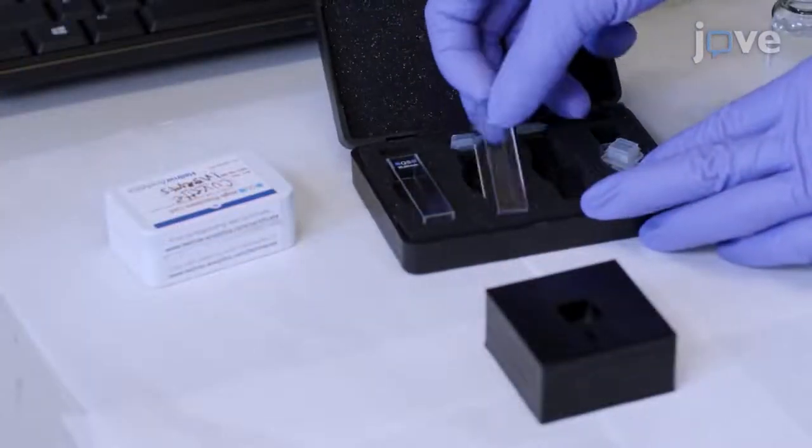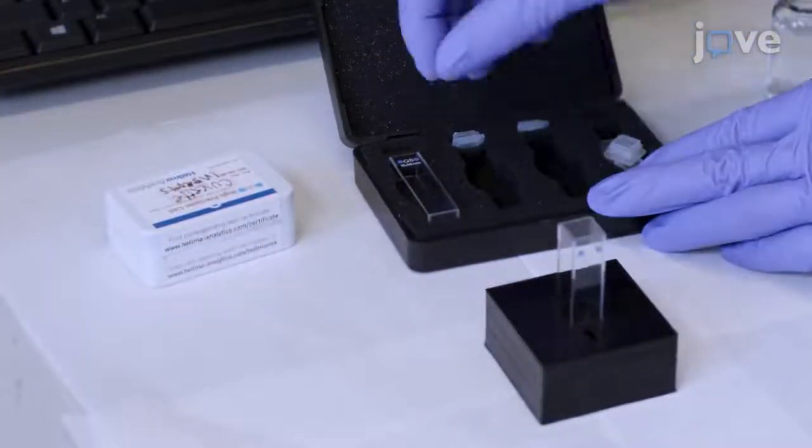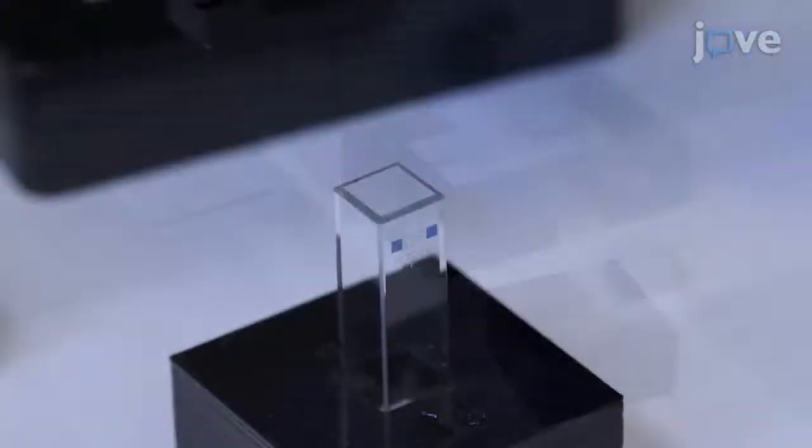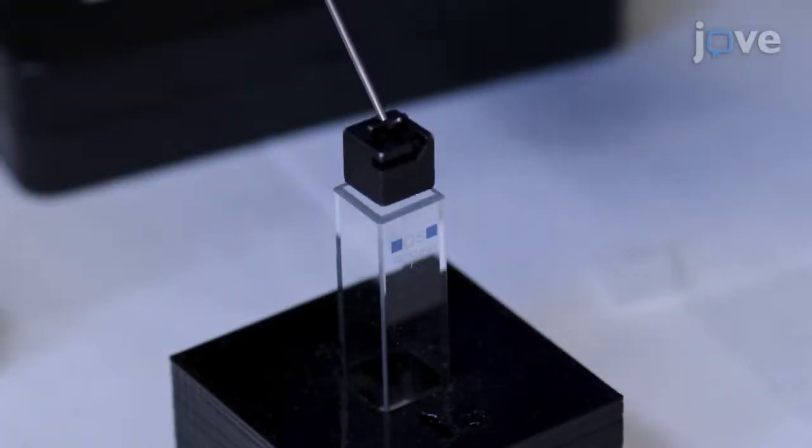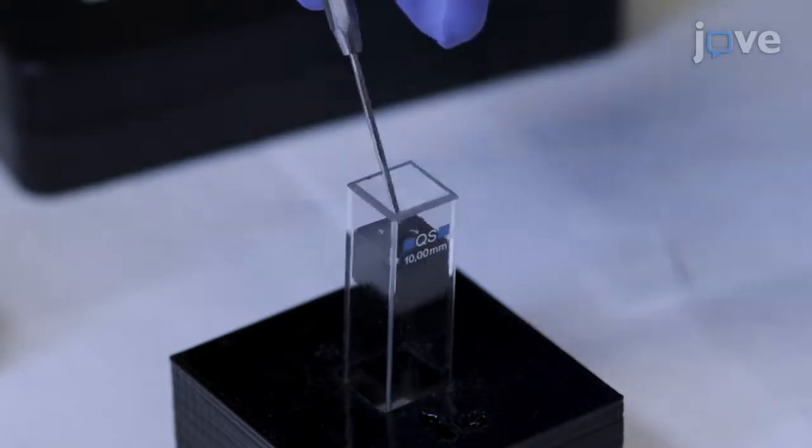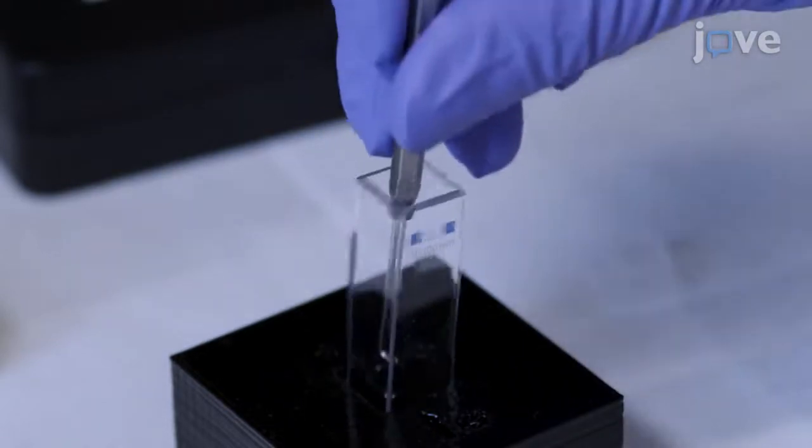Wearing gloves, place a cuvette containing a stir bar onto the magnetic cuvette jig. Use a hook tool to place the insert into the cuvette, with the notch of the insert visible at the front of the cuvette.